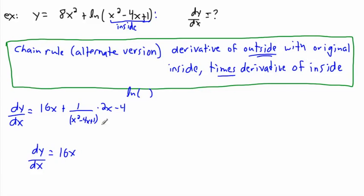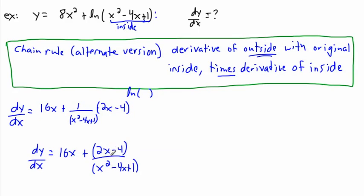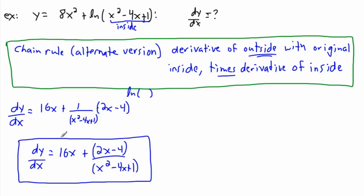Putting it together: we still have 16x, and since we're multiplying by 1 that doesn't change things, so we get plus (2x minus 4) all divided by x squared minus 4x plus 1. That denominator doesn't factor — there's no pair of numbers with product 1 and sum negative 4 — so we're done. This is the slope of the tangent at any point.